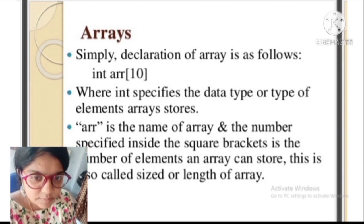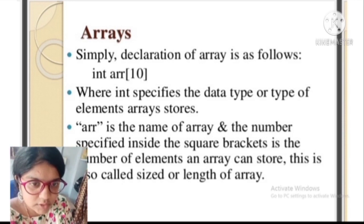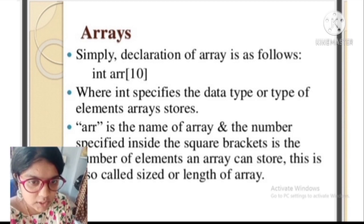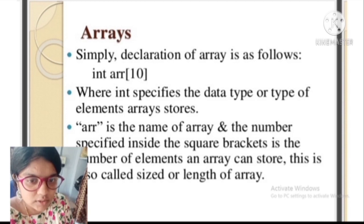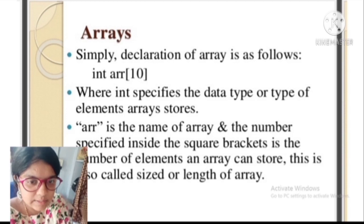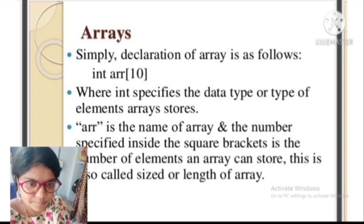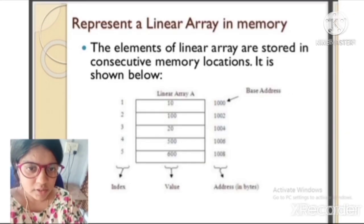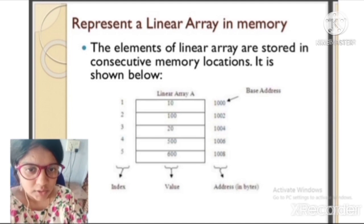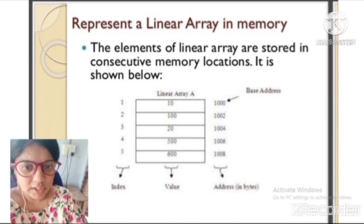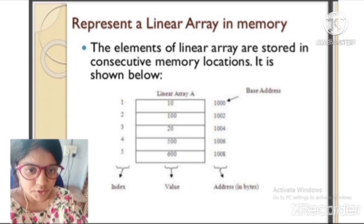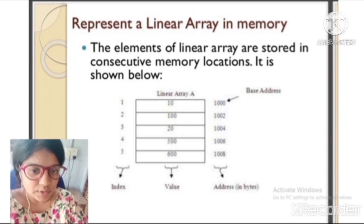In a simple declaration like int array[10], int specifies the data type, array is the name, and the number inside square brackets is the number of elements the array can store — also called the size or length of the array. The elements of a linear array are stored in consecutive memory locations.